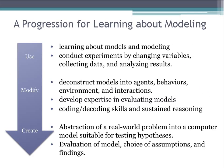When learning about modeling, there is a progression that works. At the first step, we use models — we learn about modeling by running experiments, changing variables, collecting data, and analyzing results. At the next stage, we start deconstructing models into their agents, behaviors, environment, and interactions to figure out how models work. As we do this, we develop expertise in evaluating models, determining what assumptions are being made, and gaining coding and decoding skills that build sustained reasoning. At the next stage, we work towards creating our own models, using abstraction to determine which elements of the real world are important to represent. As we use our model, we evaluate it and see if the assumptions we made were correct.